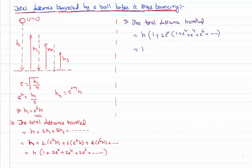So h times 1 plus 2 e square, these terms are in geometric progression of infinite terms. Summation of the infinite terms in geometric progression is a by 1 minus r, where a is the first term, r is the ratio.